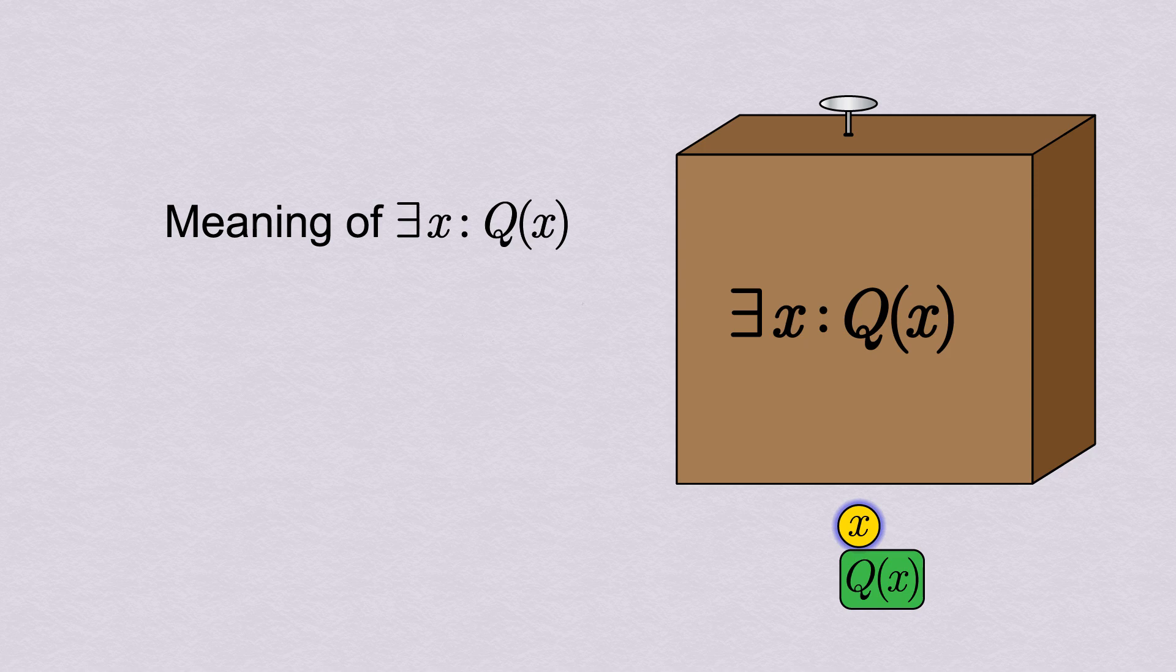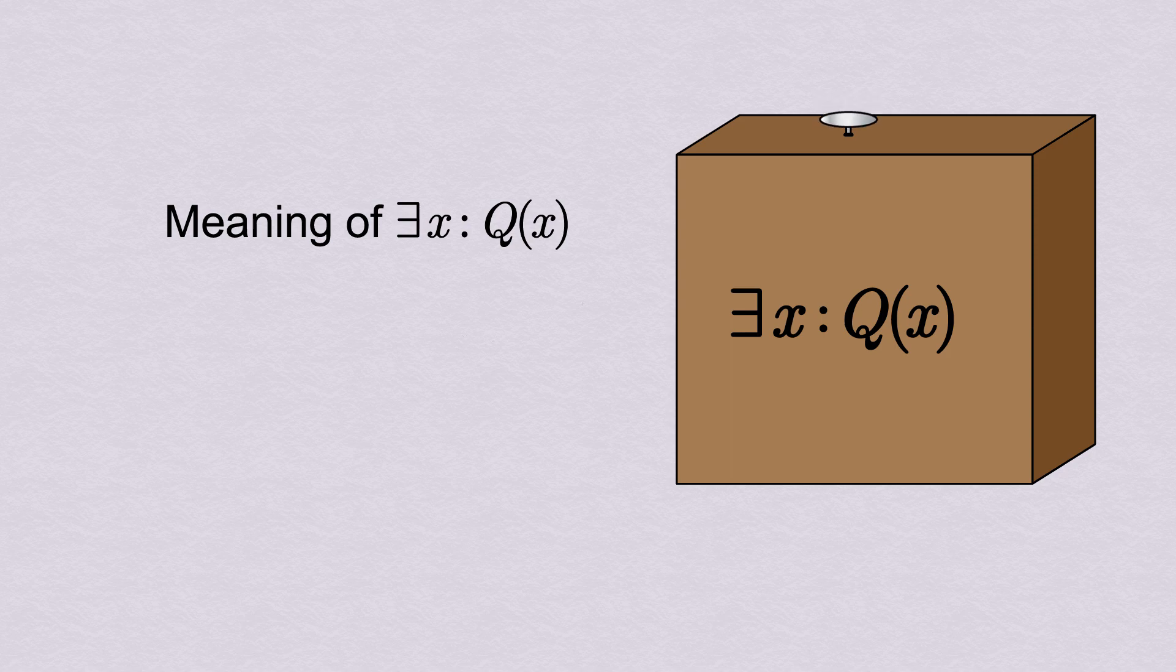The treatment of x in this transaction is exactly the opposite of how it went with the for all statement. Before we put in an x of our choosing, and now the x is given to us by the box. This makes the way we prove it and use it quite different.